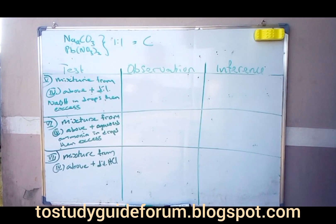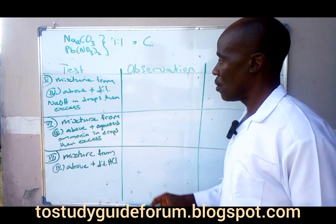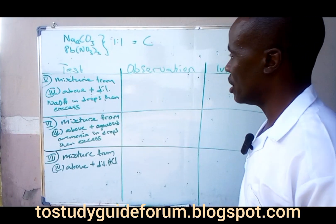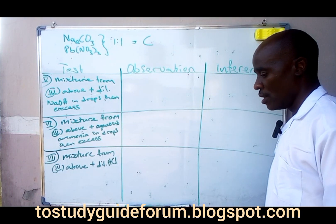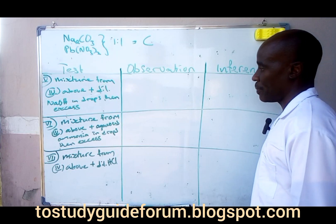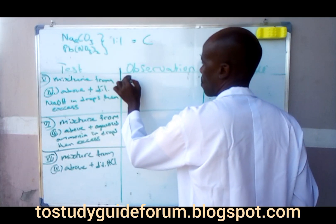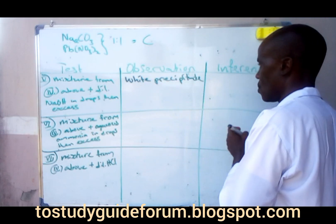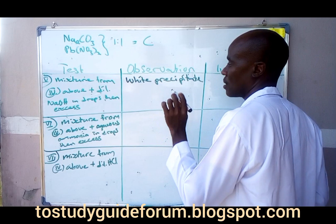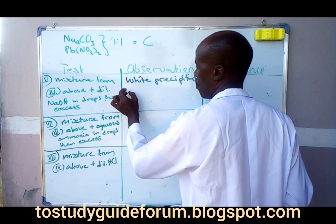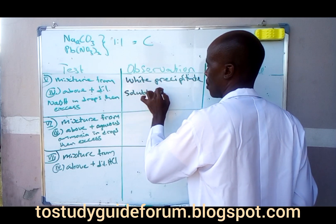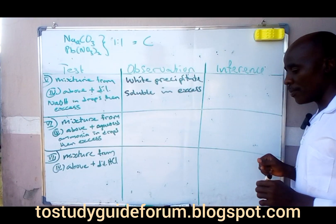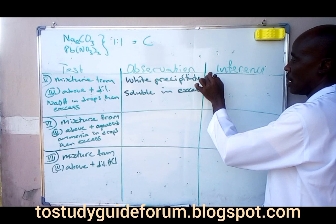The next test: from the mixture, add sodium hydroxide in drops. What we observe is a white precipitate forming in drops, which is then soluble in excess. This confirms the likely presence of zinc ion, lead ion, or aluminium ion.